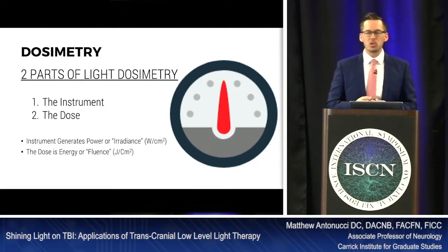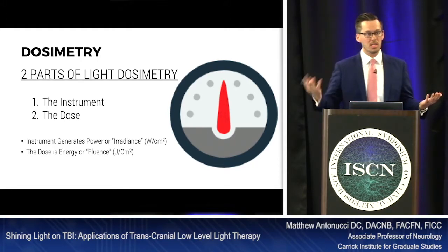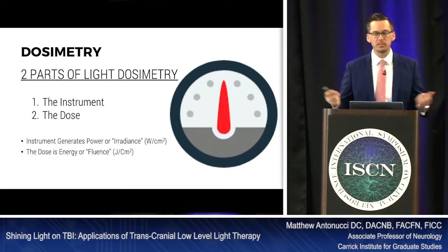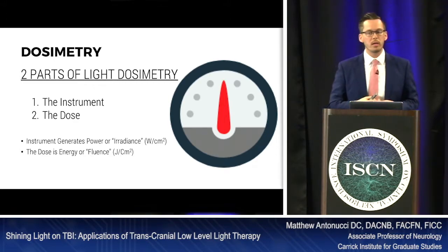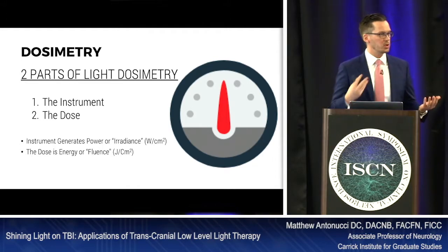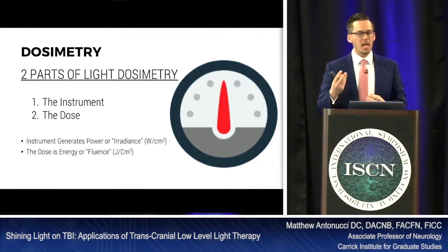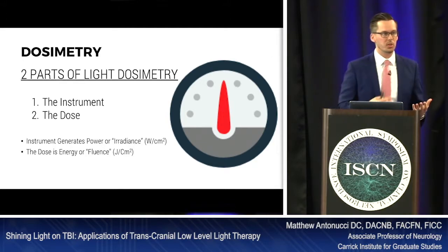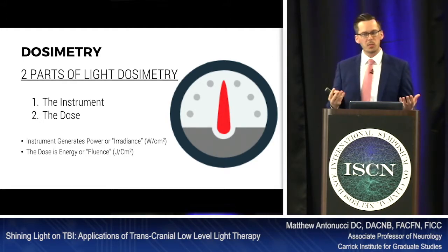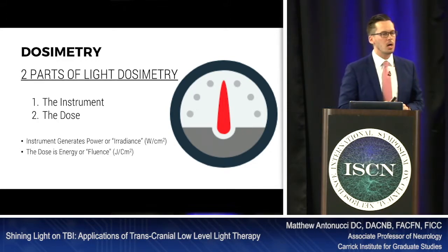There are two parts of dosimetry. The first is the instrument, and the second is the dose. The instrument generates power or irradiance, designated by watts per square centimeter. The dose is energy — also called fluence — which is joules per centimeter squared. So we're comparing watts per centimeter squared versus joules per centimeter squared, and we'll talk about the difference between irradiance and fluence.